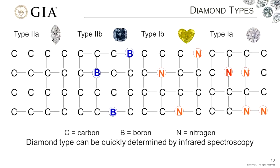We've been dealing with this synthetic diamond identification challenge for really 45 years or more. In the 1930s, scientists began to recognize that certain diamonds had similar properties. And eventually they found that nitrogen is the principal impurity that occurs in natural diamonds.